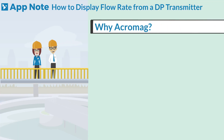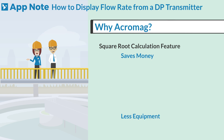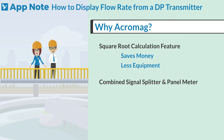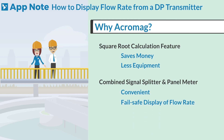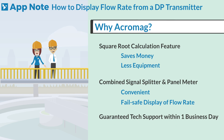Why Acromag? The square root calculation feature saves money because no additional computation unit is needed. Combining a signal splitter with a panel meter creates a convenient and fail-safe display of the flow rate. And Acromag guarantees technical support within one business day should any questions arise.